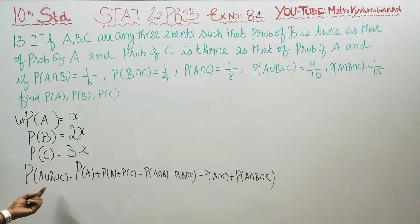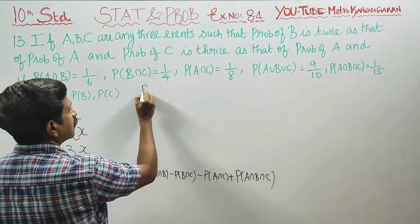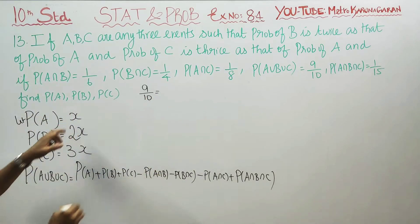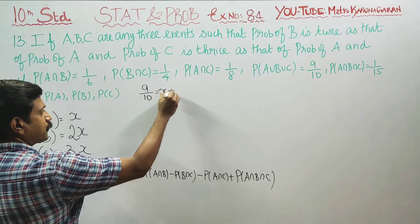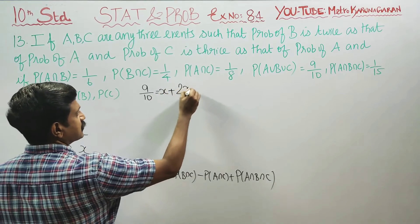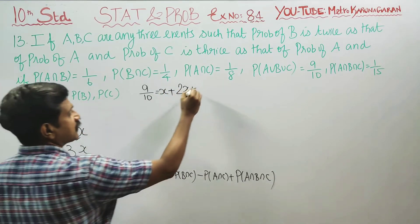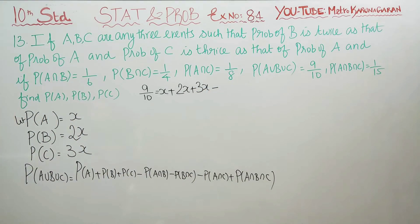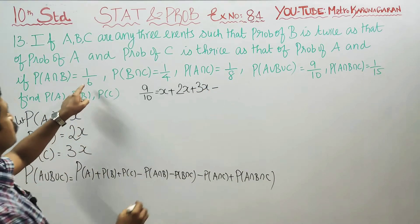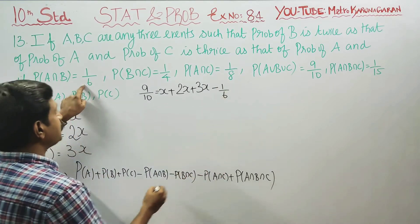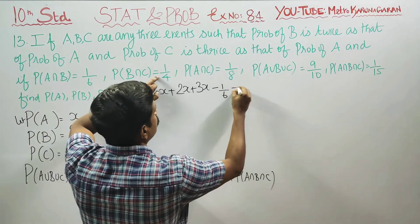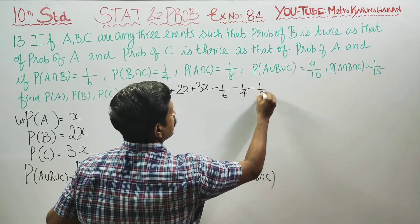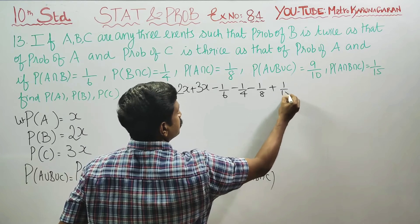Probability of A union B union C equals 9 by 10. Probability of A is X, probability of B is 2X, probability of C is 3X. Minus probability of A intersection B which is 1 by 6, B intersection C is 1 by 4, A intersection C is 1 by 8, and A intersection B intersection C is 1 by 15.